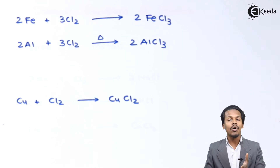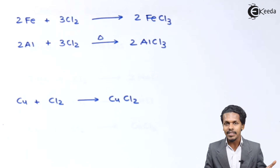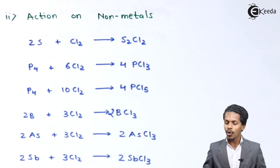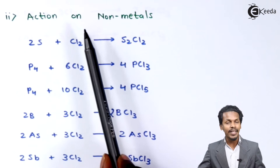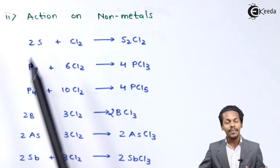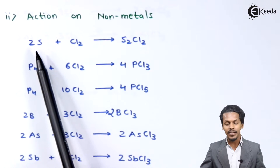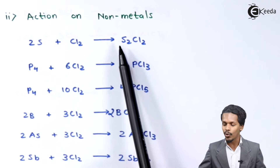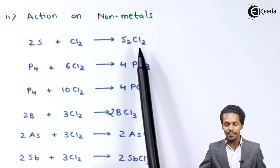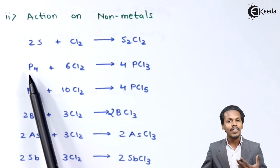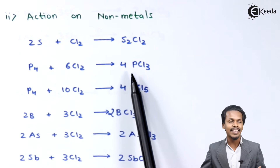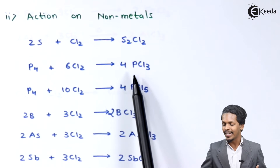That was the reaction of chlorine on metals. Now let me talk about the action of chlorine on non-metals. When 2 moles of sulfur is reacted with Cl₂, it forms sulfur monochloride, S₂Cl₂. And when phosphorus is reacted with 6 moles of Cl₂, it forms 4 moles of PCl₃, known as phosphorus trichloride.